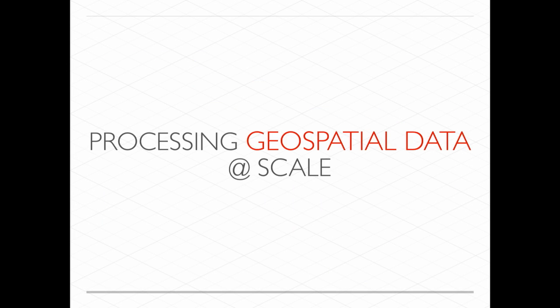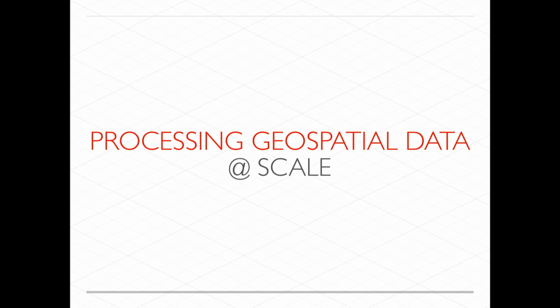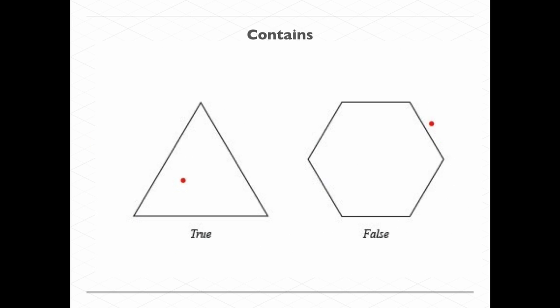So what does processing geospatial data mean? If we just think of it as lat/long coordinates, we're just processing doubles — that's not unique. But there are actually a lot of unique challenges. For instance, it's really easy for your brain to solve: the triangle contains the point, the hexagon doesn't contain the point. But if you try to write a generic algorithm for any polygon and point, it's actually really non-trivial.